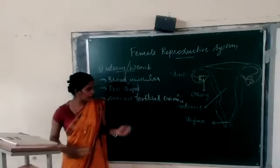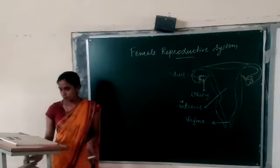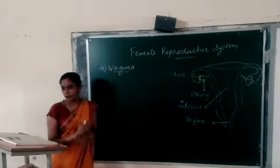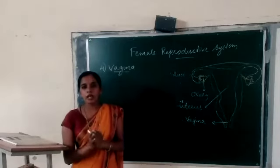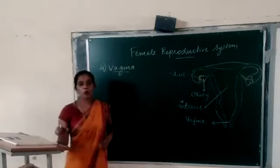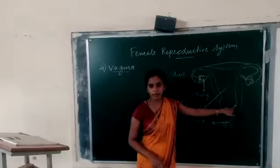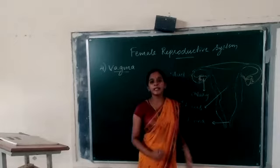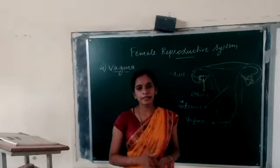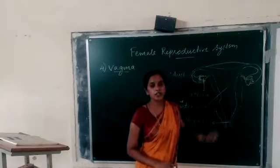The last part is the vagina. The vagina is a wide muscular tube which is connected with the uterus and the organs outside. This vagina is attached to the uterus, and this is the place where sperm is received from the male reproductive organ. That is the function of the vagina.